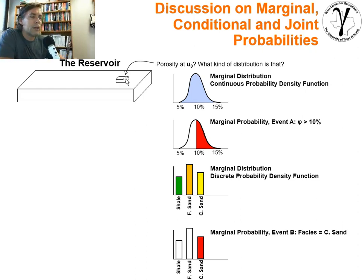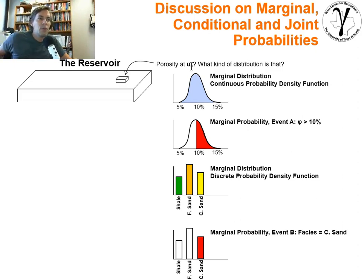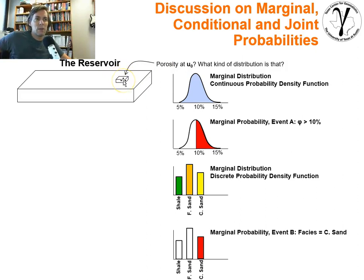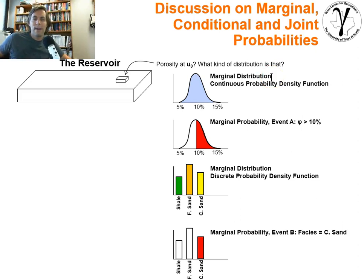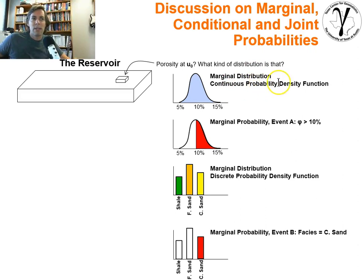We give ourselves this little box and ask: what is the porosity at that location? Remember that u-bold is just a location vector, and we use the notation to indicate that we have not sampled that location — an unsampled location. The entire uncertainty could be represented as a distribution. It turns out it's a marginal distribution, because it only considers one event or one property. It's just concerned about porosity — a continuous probability density function that could go between 5% and 15%.